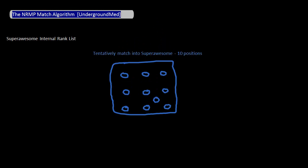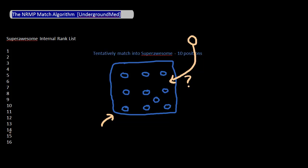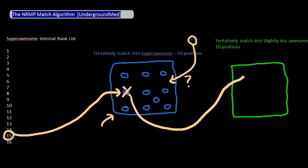To illustrate this, let's say the first ten people added by the computer all rank Super Awesome as their number one. Since the computer is just starting, all ten of these students are tentatively matched into Super Awesome. The eleventh student the computer picks also has Super Awesome as their number one. In this situation, there are more students ranking Super Awesome as their number one — eleven — than there are spots available — ten. So someone has to be removed from Super Awesome. The computer looks at how all eleven students are ranked in the program's internal rank list and removes the student who is the lowest. That student now can't match into their number one choice, and so will tentatively be placed into their number two choice, Slightly Less Awesome. I say tentatively because if there are enough students ranked higher on that program's list added later, this student will be moved down to their third choice, and so on. The computer does this for every student one by one in the country, and the result is the match list.